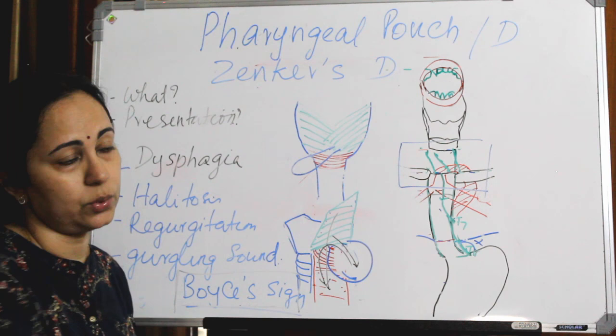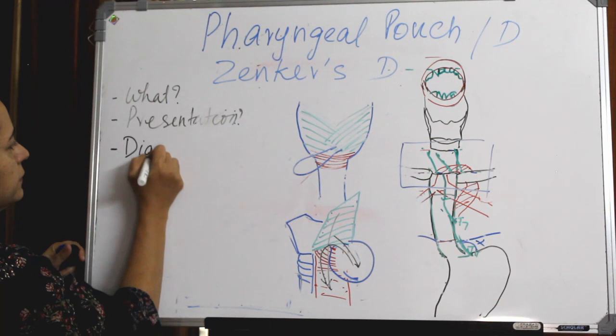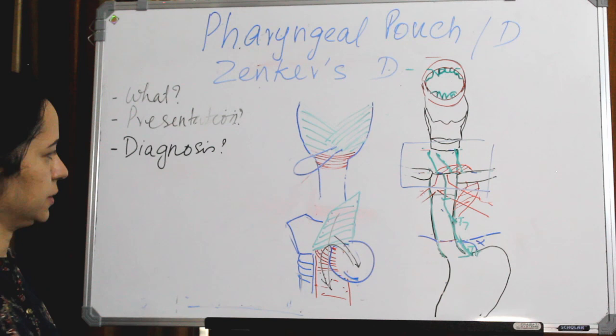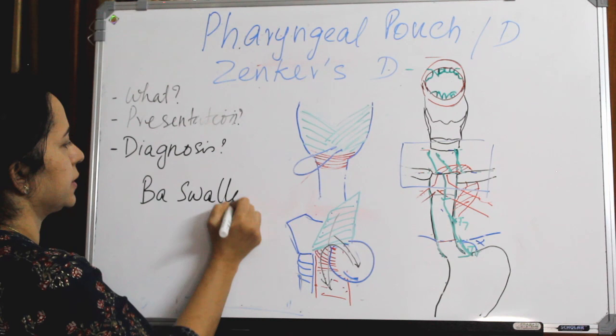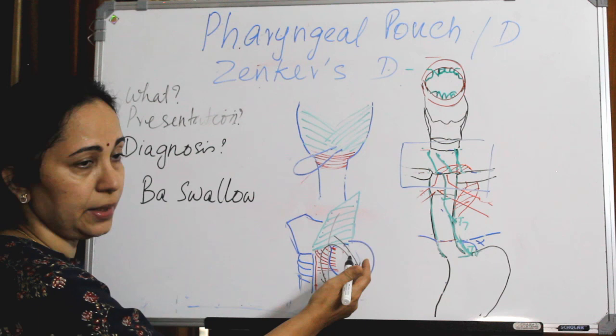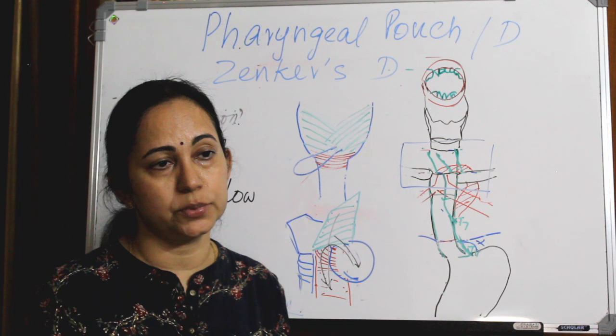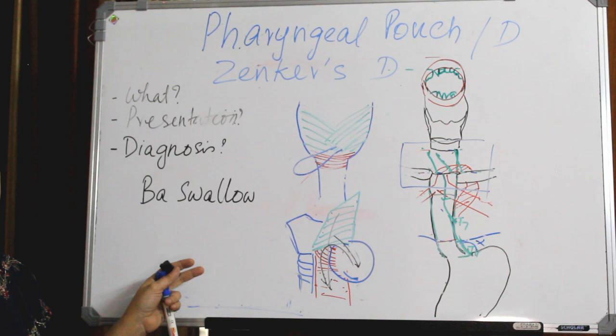So how will you diagnose pharyngeal pouch? One is by the typical clinical features we already mentioned. Then barium swallow - because it is a posterior pouch, the lateral view is important. More precisely, it is a videofluoroscopic barium swallow where the whole process of swallowing is captured after giving barium. So videofluoroscopic barium swallow is the diagnostic modality of choice, along with the clinical features.